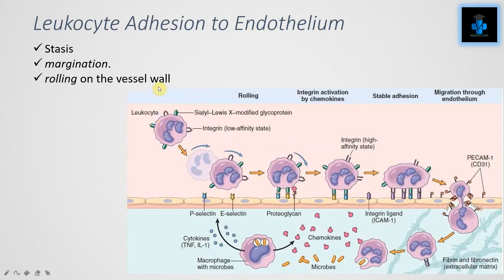Normally the leukocytes travel at the center of the vessel wall. This is the vessel wall and this is the leukocyte traveling at the center. Due to stasis or decreased blood movement, the leukocytes marginate to the endothelial surface. After that, rolling on the vessel wall is mediated by molecules like selectin and integrin — this is selectin and these are integrins.